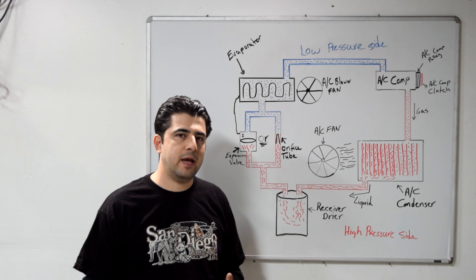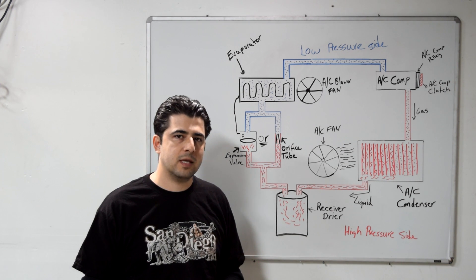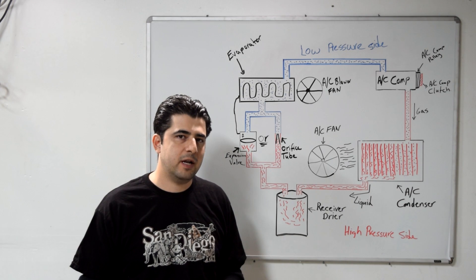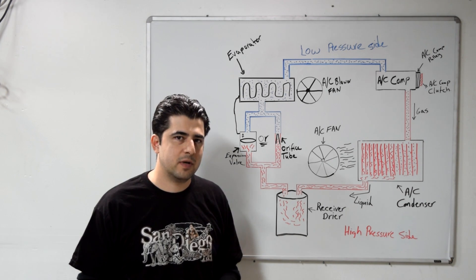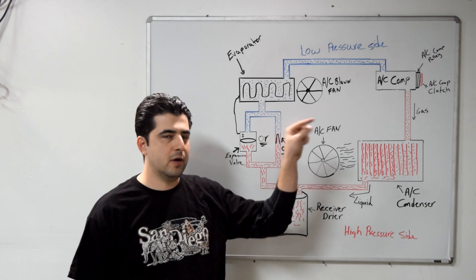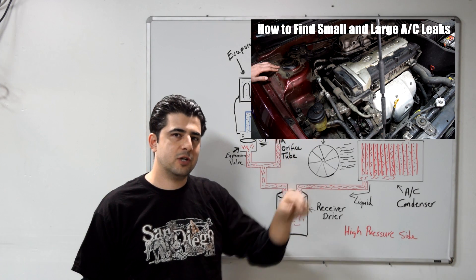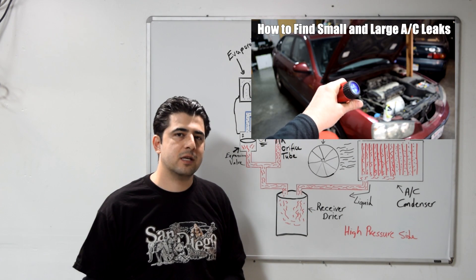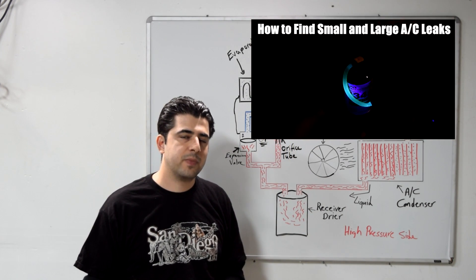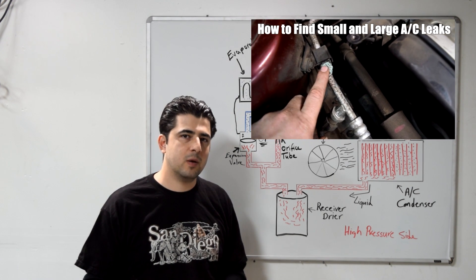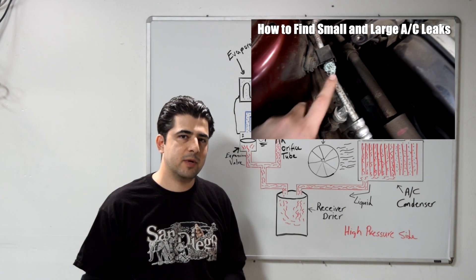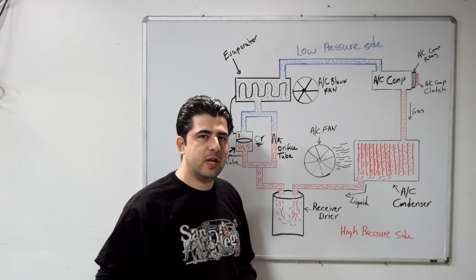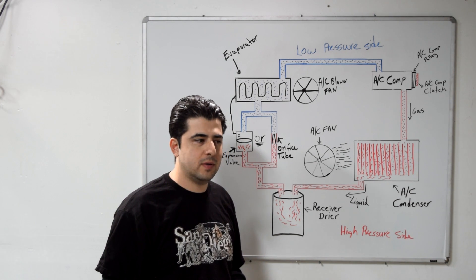Also, if you try to add refrigerant and find out you have a leak but can't find where it's coming from, I recommend watching this other video — I'll put a link right here — which shows you how to find small and large leaks in your AC system. It's an easy and practical method. If you don't have an AC pressure gauge set, here's what you can do.